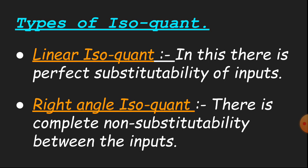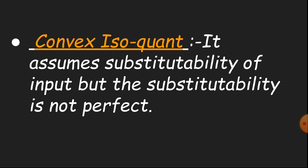The types of isoquants are: first, linear isoquants, in which there is perfect substitutability of inputs; second, right-angle isoquants, where there is complete non-substitutability between the inputs; and third, convex isoquants, which assume substitutability of inputs but the substitutability is not perfect.